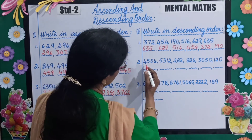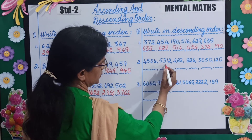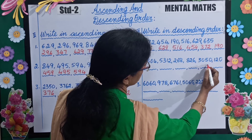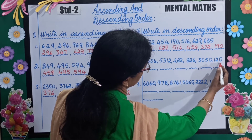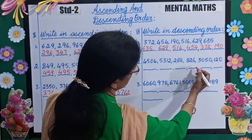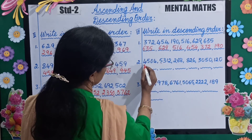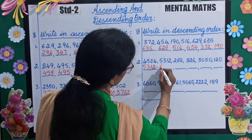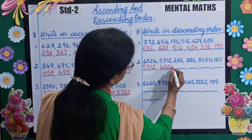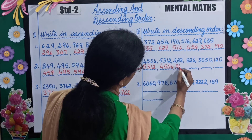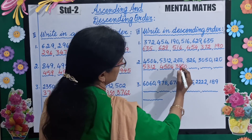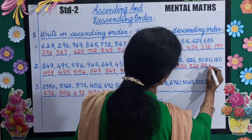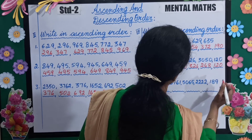Very good. Now next number: 4504, 5312, 268, 826, 300, 3050, and 120. So which is the biggest number? You will write 5312 first. Next is 4504, next is 3050, then comes 826, then 268 and 120.